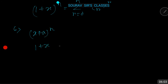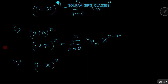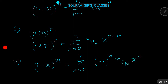Property number six: putting a = 1 in the expansion of (x + a)^n, we get (1 + x)^n = Σ(r=0 to n) nCr · x^(n-r). This is the expansion of (1 + x)^n in descending powers of x. Property number seven: putting x = 1 and a = −x, then (1 − x)^n = Σ(r=0 to n) (−1)^r · nCr · x^r.